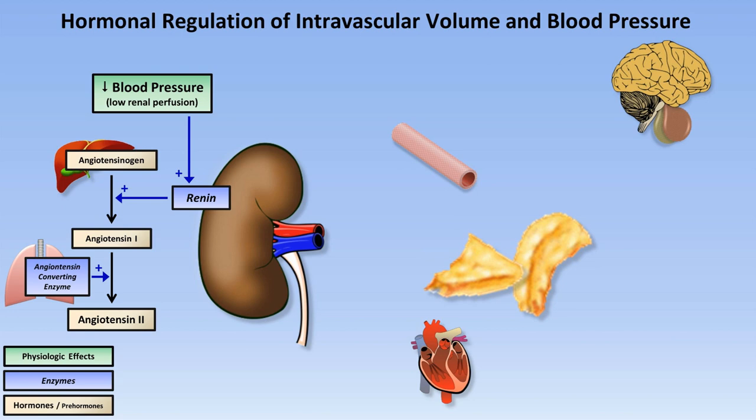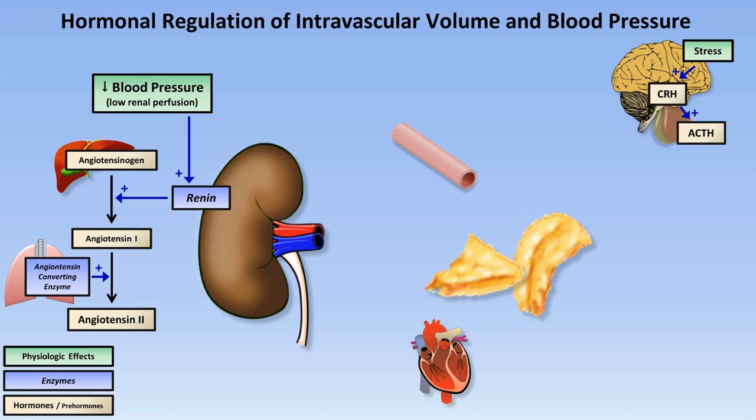Simultaneous to that, CRH produced by the hypothalamus under the influence of physiologic and emotional stress promotes release of ACTH from the anterior pituitary, which then travels to the adrenals. In the adrenal glands, ACTH stimulates conversion of various steroid precursors, both to aldosterone as well as cortisol. Now, another major action of angiotensin 2 is to further stimulate the production of aldosterone specifically.